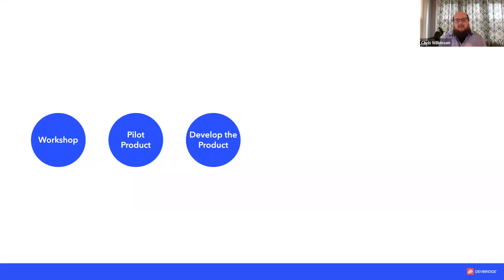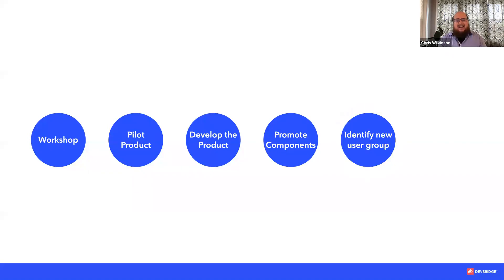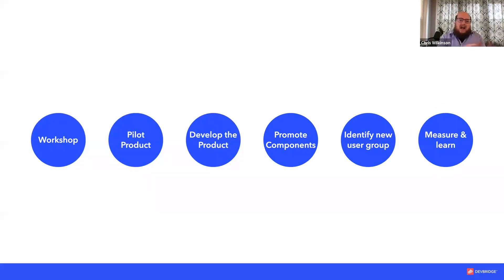As individual components and patterns prove out, you can promote those components into a design system that can be shared, then identify a new user group and a new product, onboard them, and track that new product's successes and failures. Rather than trying to do an all-in-one sweep, identify a pilot product and roll it out over several different products as that value is proved out over time.